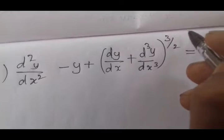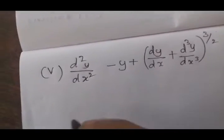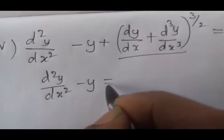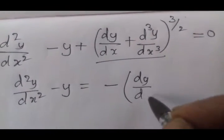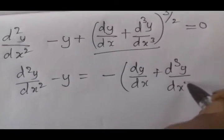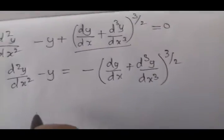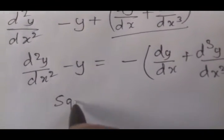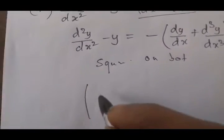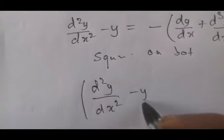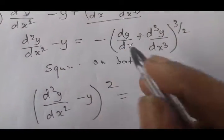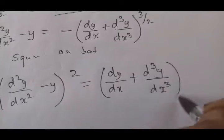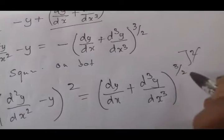The power 3/2 — you multiply by 2 to cancel. So: d²y/dx² minus y = minus of dy/dx plus (d³y/dx³) whole power 3/2. Squaring on both sides: d²y/dx² minus y, the whole squared, equals the right side. The power 3/2 times 2 cancels to give power 3.